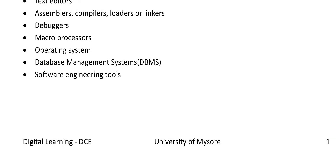Let us learn about some examples of system softwares which are popularly used on a day-to-day basis on our computers and smartphones. Text editors is one popular system software. We also have assemblers, compilers, loaders, and linkers, which we will learn in detail in this course. Debuggers, which we have come across in C programming, are another important system software, followed by microprocessors. Operating systems are another crucial system software, part of all smartphones and computers, without which they cannot function. Database management systems and software engineering tools are also important system softwares.